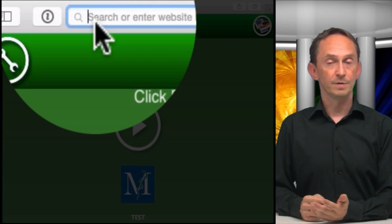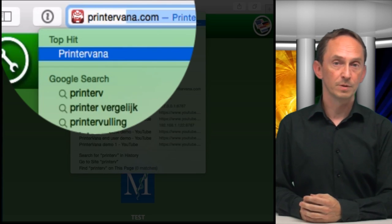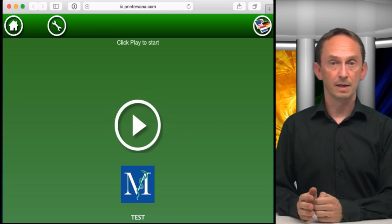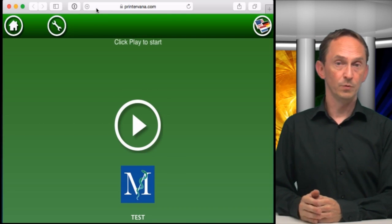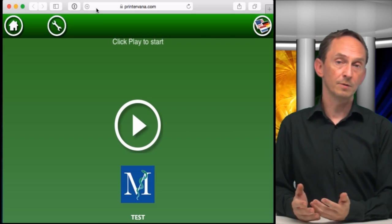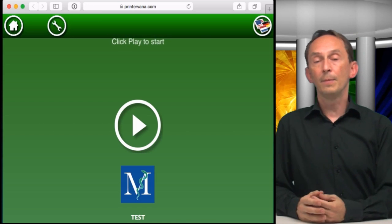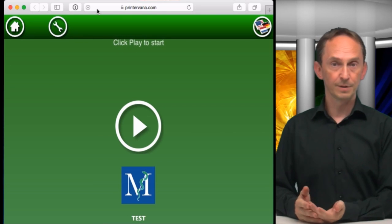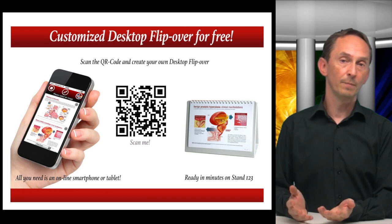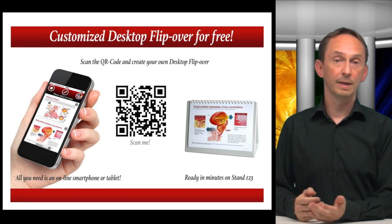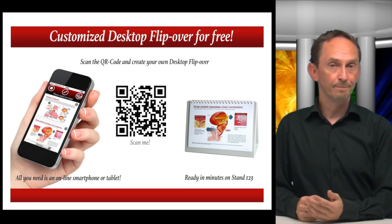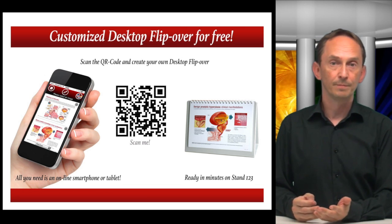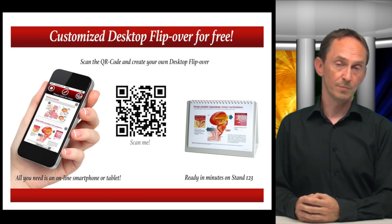Our web app, Printavana, allows them to quickly make a personalized customized printed item that they can then pick up at the booth where your sales reps can welcome them and interact. By making this a web app, you can attract your customers even before they arrive on the booth. For instance, with a flyer in a welcome pack or an emailing with a link to Printavana.com. This way, they can use their own smartphone, tablet, or computer to create something they will want to come pick up at your booth.